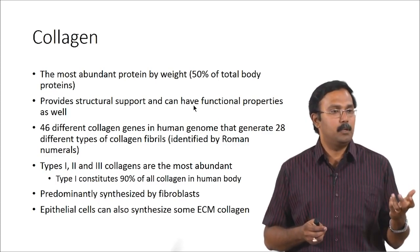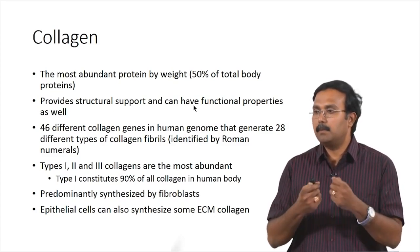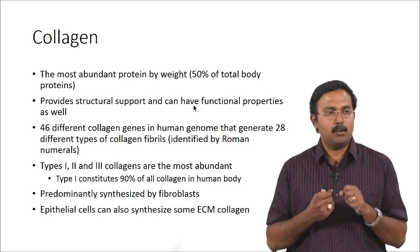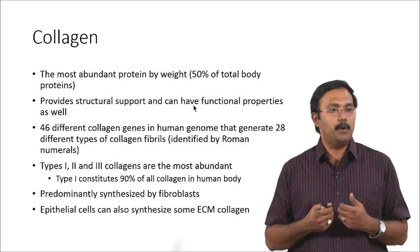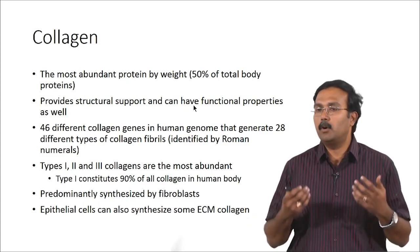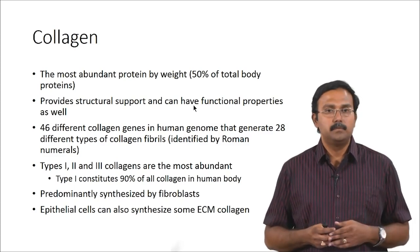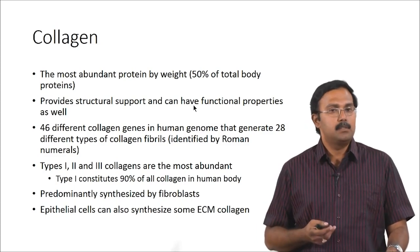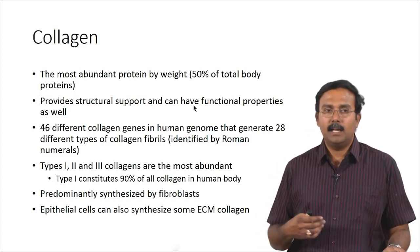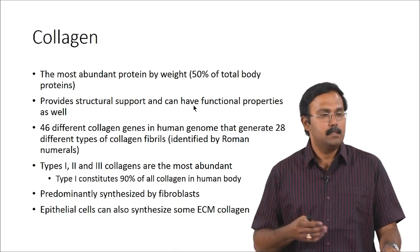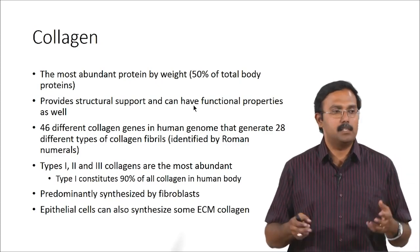There are 46 different collagen genes in the human genome generating 28 different types of collagen fibrils, identified using Roman numerals. The collagen fibrils assemble to form collagen fibers and these bundles impart mechanical strength. Types 1, 2, and 3 are the most abundant, with type 1 constituting about 90% of all collagen in the human body. Type 1 is present in all tissues and is predominantly synthesized by fibroblasts — you can culture fibroblasts in certain environments to make them secrete collagen, though yield is always a challenge.